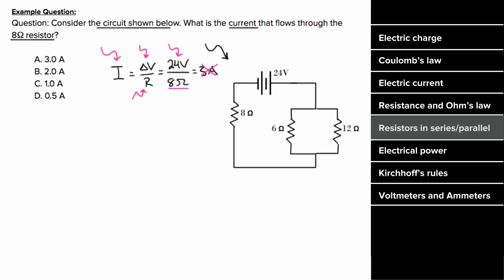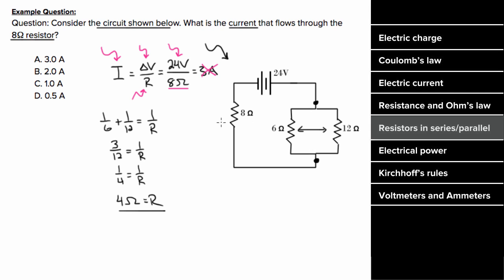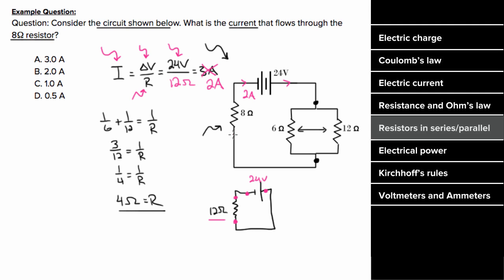So we have to reduce these resistors to a single resistance. The six and the twelve are in parallel, so one over six plus one over twelve equals one over the resistance of that portion of the circuit. This equals three twelfths, which is one fourth. So that parallel portion has an equivalent resistance of four ohms. That equivalent resistance is in series with the eight ohm resistor, so we can add four and eight and get twelve ohms of total resistance. The full 24 volts of the battery is applied across this equivalent resistance of twelve ohms, giving a total current of two amps. And since the eight ohm resistor is in series with the battery, two amps also flows through the eight ohm resistor.